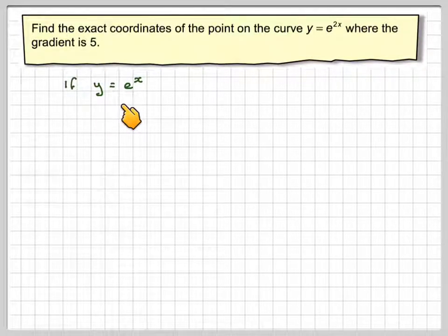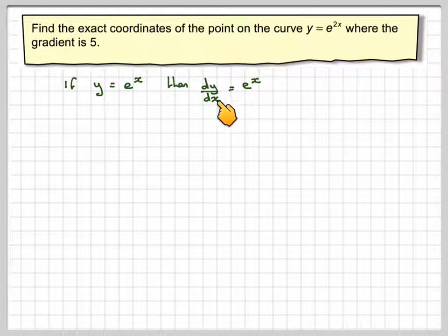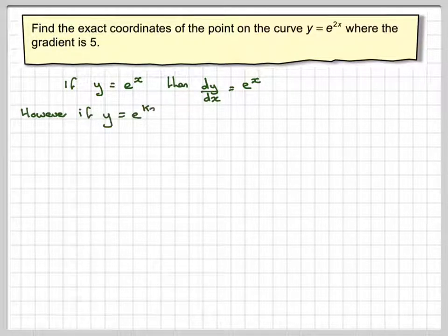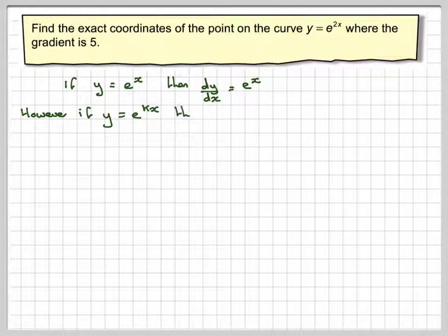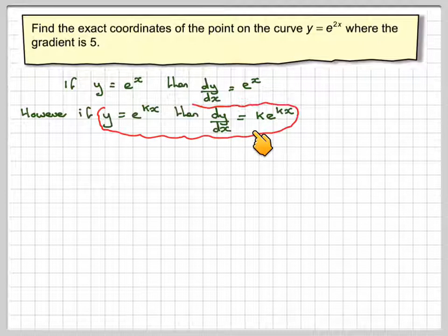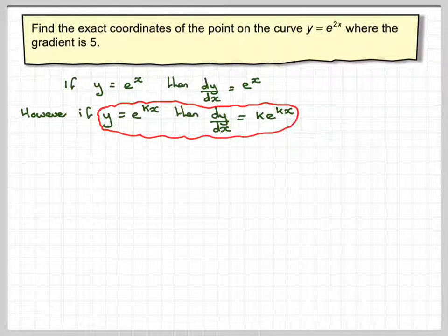So we know that if y is equal to e to the x, and we differentiate it to get the gradient function, you get itself dy by dx equals e to the x. What we don't know how to really do, if y is equal to e to the kx, in this case e to the 2x, what do we do? Well, later it will be shown that dy by dx will be ke to the kx. So all you do is you bring the 2 down in front and write down the same thing again.